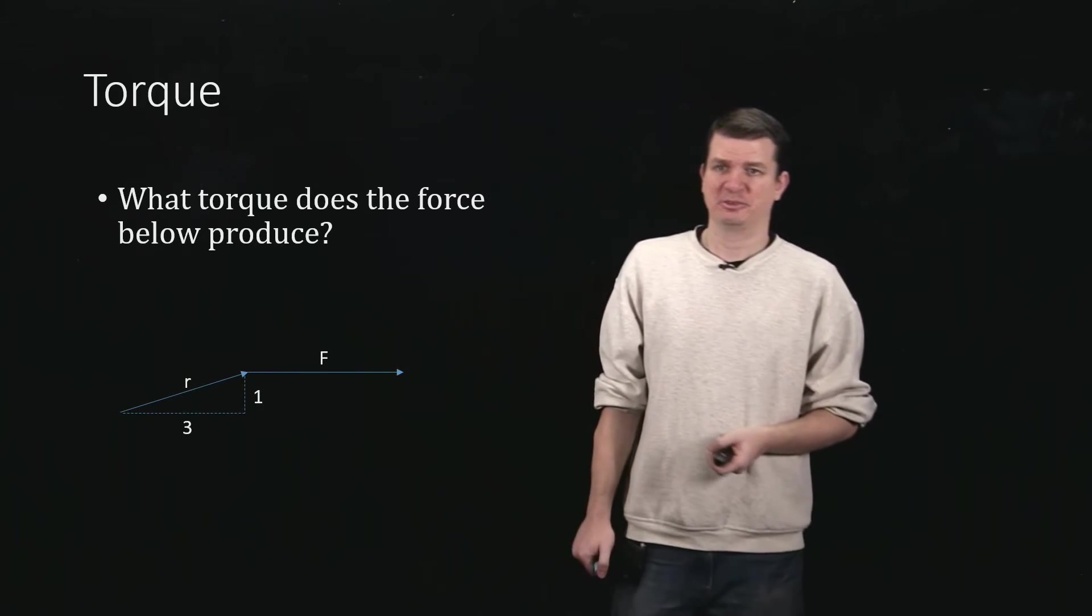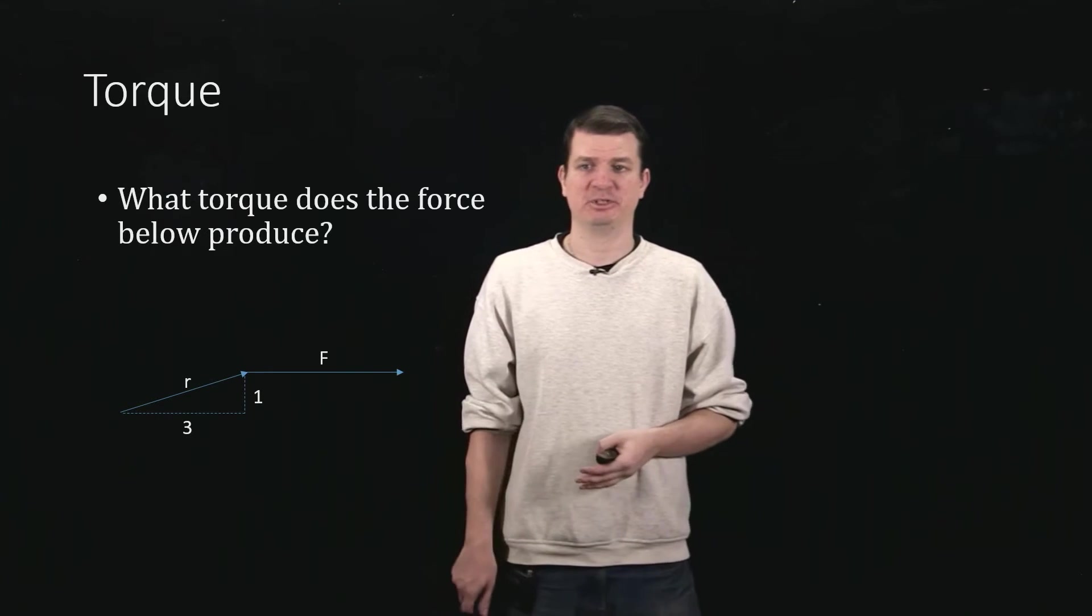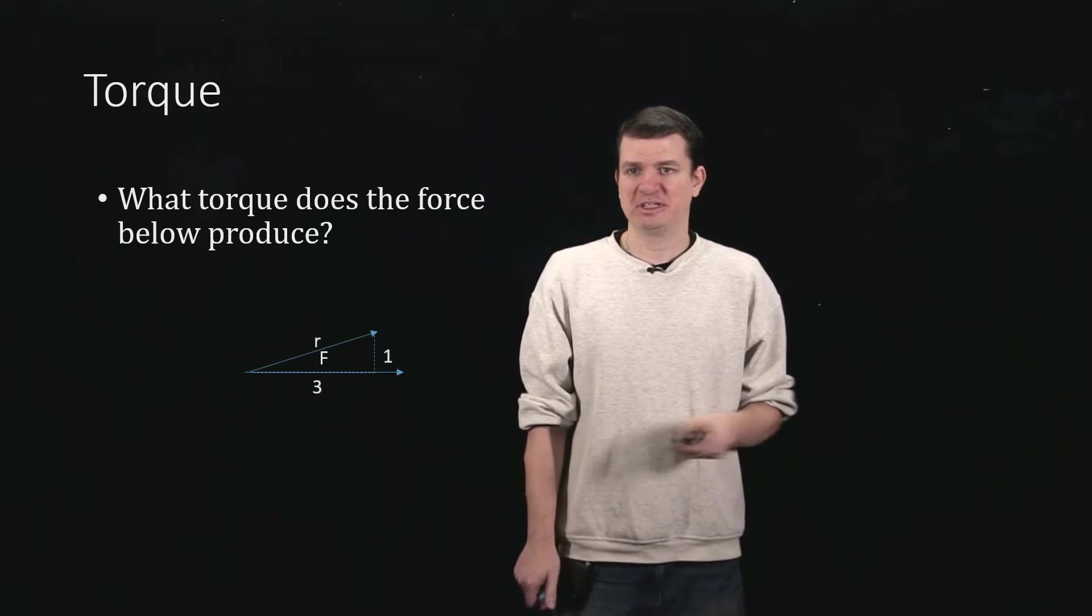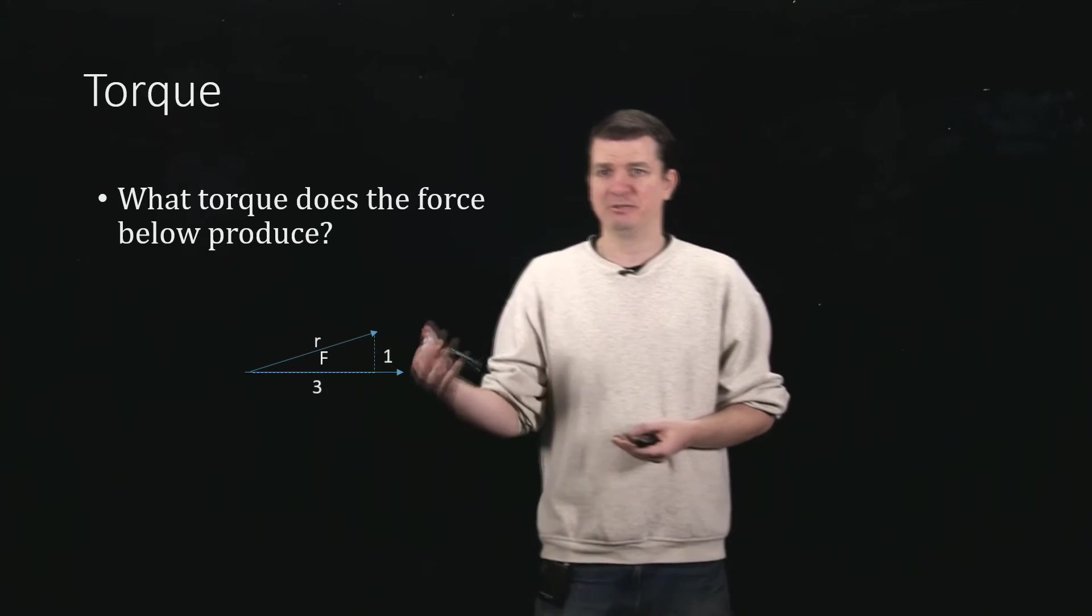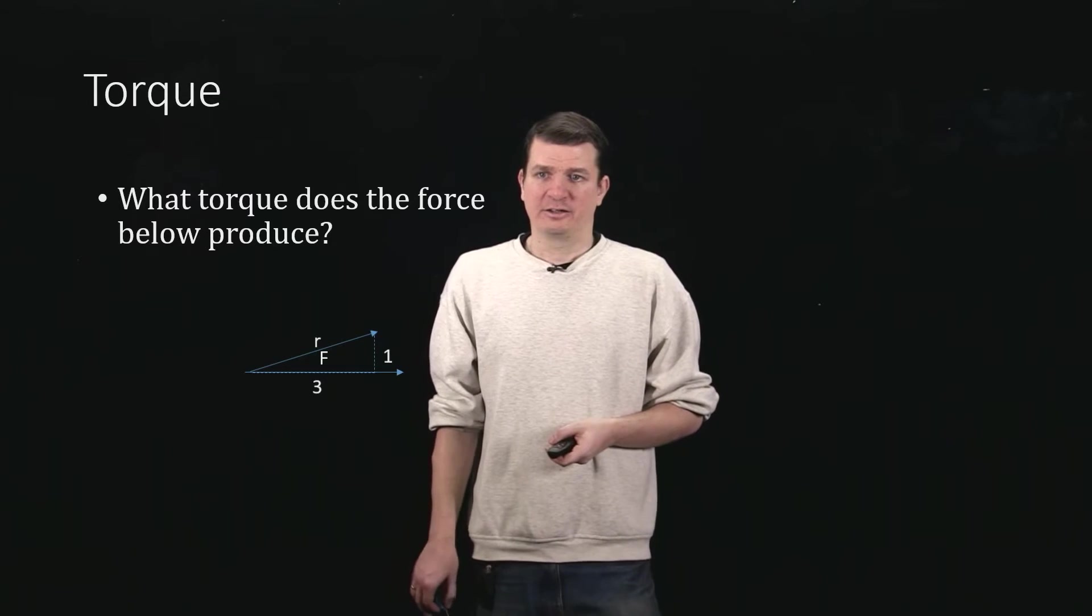We would like to know what this cross product, or what this torque is going to be, and of course it's supposed to be a cross product. So we'll shift this guy over, and then we can see that we could do a little bit of trig to find the angle between them. So we could certainly write r times F times the sine of the angle between them.